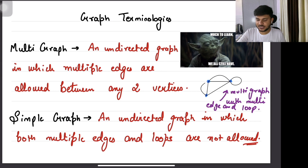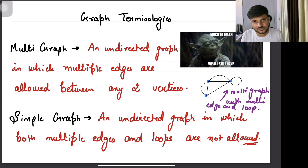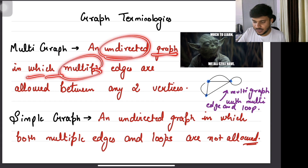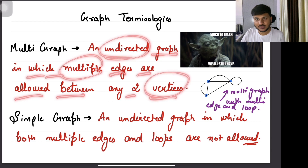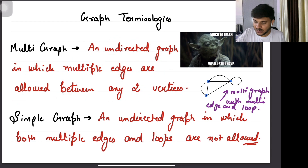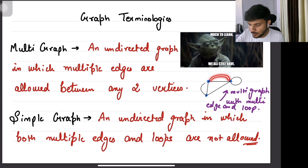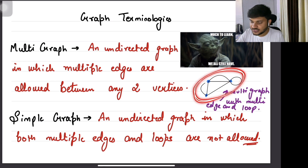Let's start with the first terminology: multi-graph. We have already seen some different types of graphs — undirected graph, directed graph, weighted graph, unweighted graph. Now there are some more different types of graphs. So what is a multi-graph? A multi-graph is an undirected graph in which multiple edges are allowed between any two vertices, and even loops. So multiple edges and loops are also allowed. A vertex can point towards itself — that is a self-loop — and between two vertices there can be multiple edges. So this is a typical representation of a multi-graph.